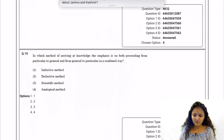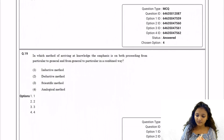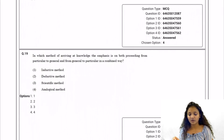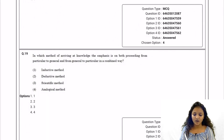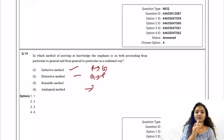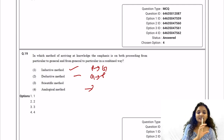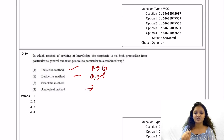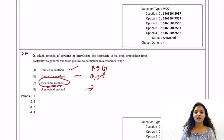Question 19: In which method of arriving at knowledge is there emphasis on both proceeding from particular to general and from general to particular in a combined way? Inductive method is particular to general, deductive is general to particular, and analogical finds similarity. The scientific method combines both. Option number three — scientific method — is the correct answer given by NTA.